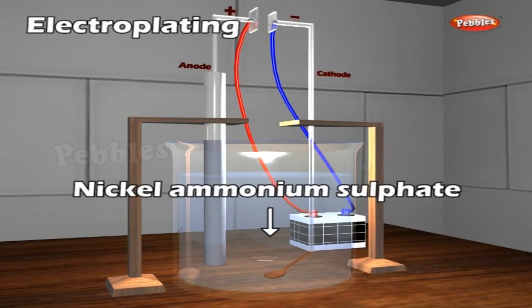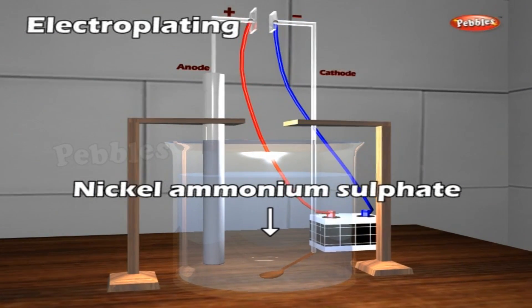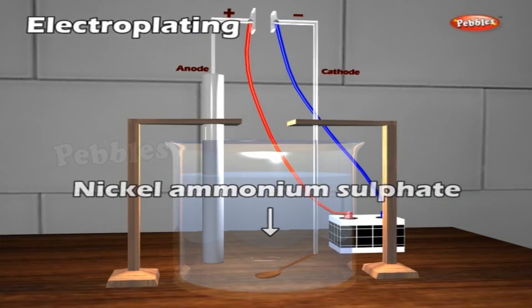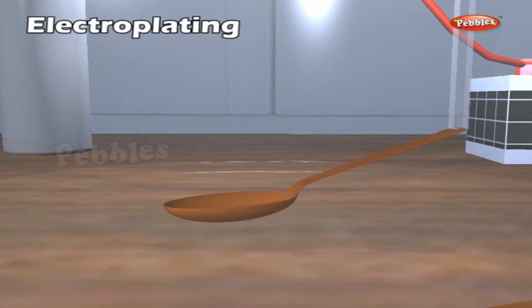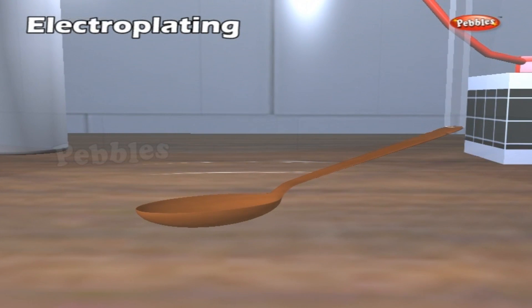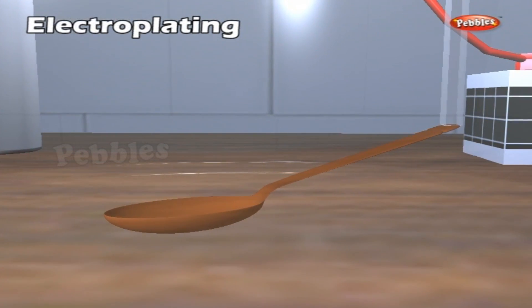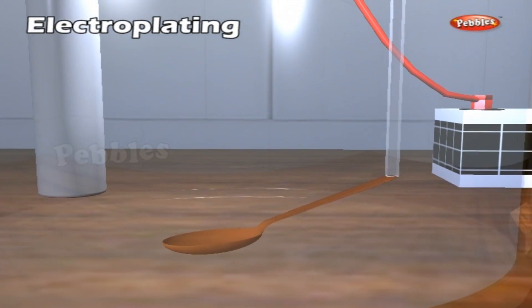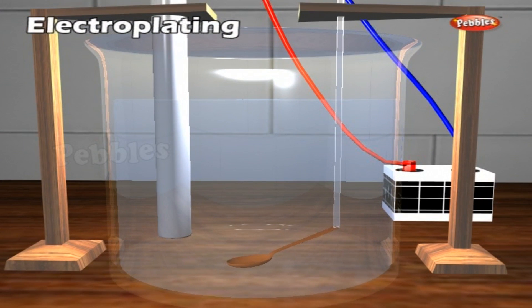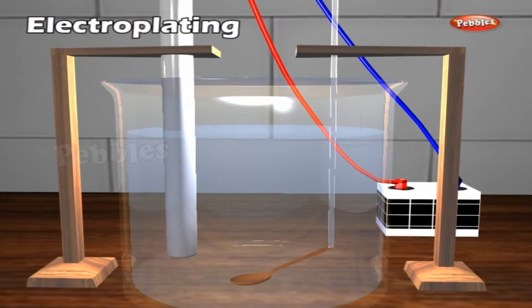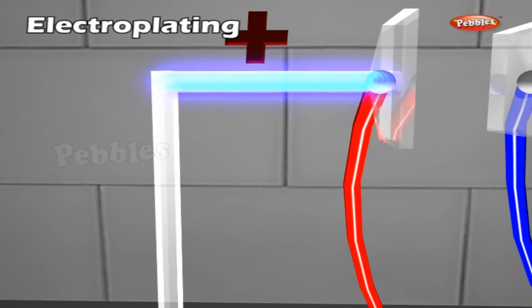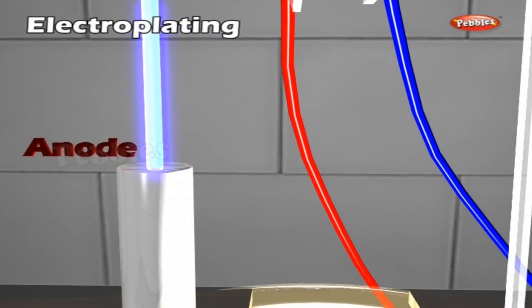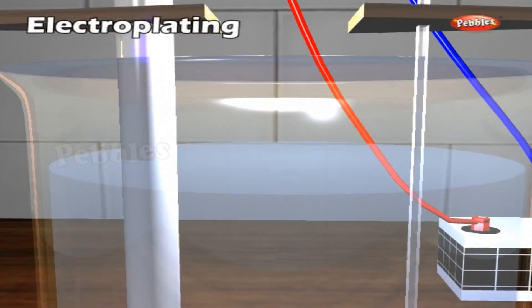Take a complex salt solution like nickel-ammonium sulphate solution in a large beaker. Keep a cleaned copper spoon inside the solution and connect it to the cathode of a battery. Keep a pure nickel foil inside the solution and connect it to the anode of the battery. Pass electric current through the electrolyte — nickel-ammonium sulphate — then cut off the supply after some time.